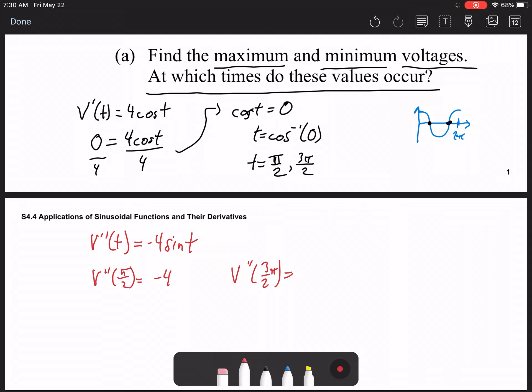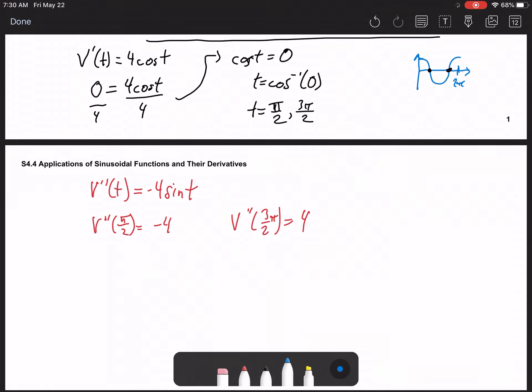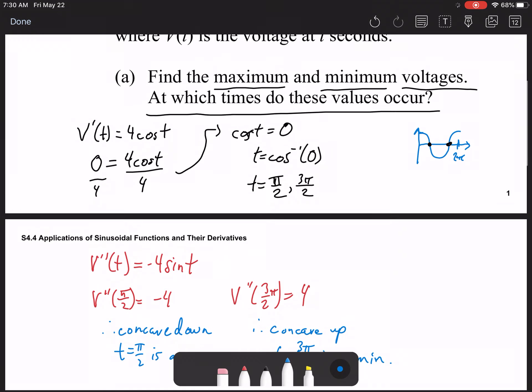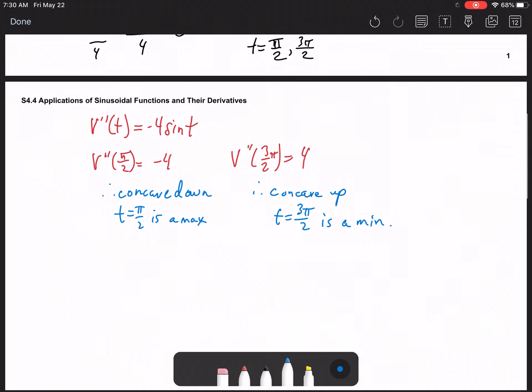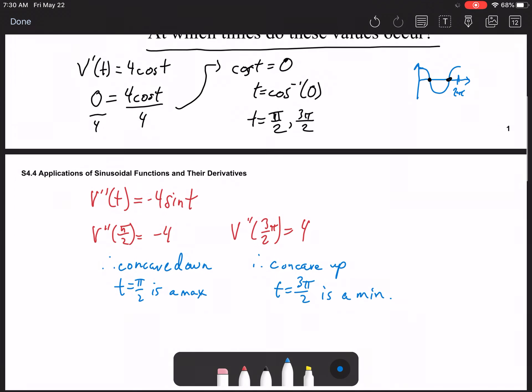So, this one equals -4, and this one equals positive 4. What we've found is this one is concave down, so t = π/2 is a max. This one is concave up, and therefore, t = 3π/2 is a minimum. Now, knowing the function, as you do, of 4sin(t) + 9, you can actually draw a sketch of what this looks like.